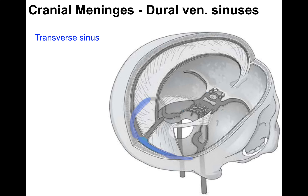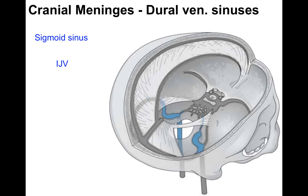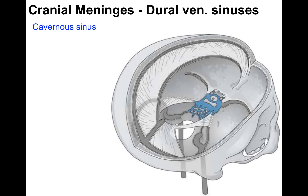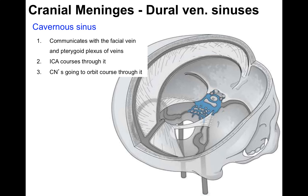The transverse sinus runs along the back of the tentorium cerebelli from left to right, giving rise to the sigmoid sinus, which makes an S-shaped appearance and then dives down through the jugular foramen to become the internal jugular vein. The cavernous sinus is a paired dural venous sinus flanking the sides of the sphenoid body; it communicates with the facial vein and pterygoid plexus of veins, and the internal carotid artery courses right through the middle of it.